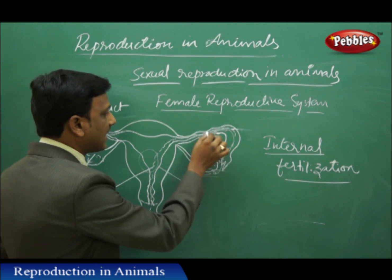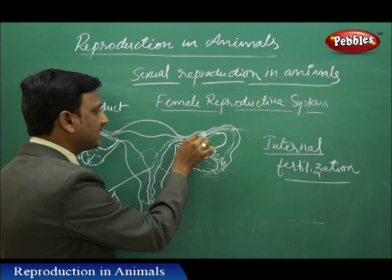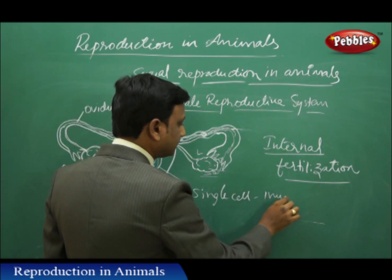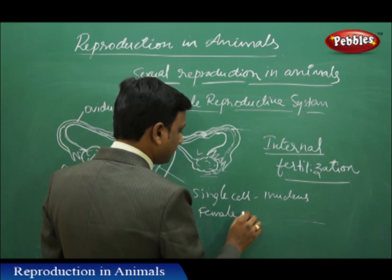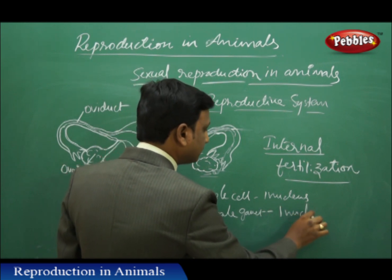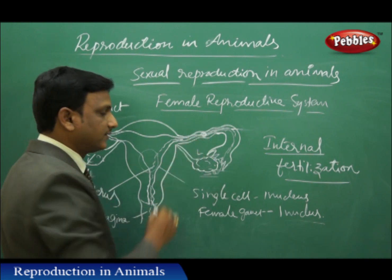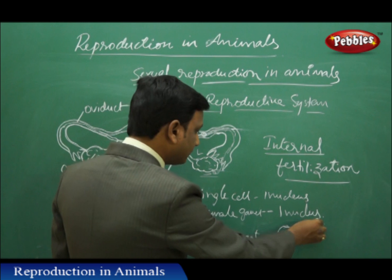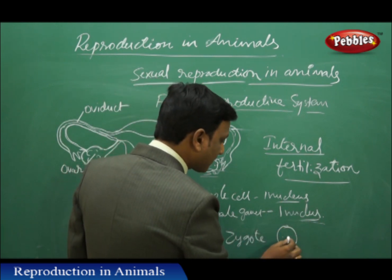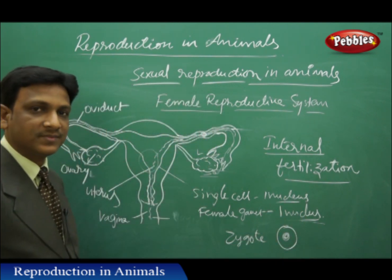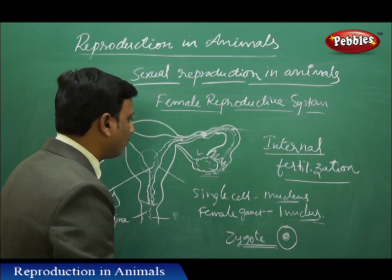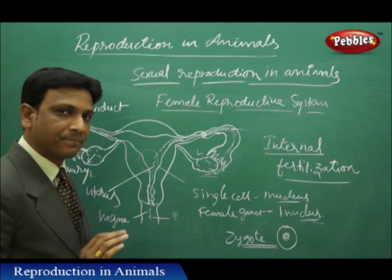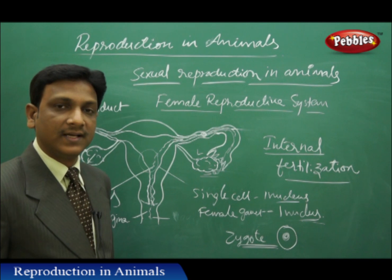If the fallopian tube already has an ovum released by the ovary, the male cell fuses with the female cell. The male cell is a single cell with one nucleus, and the female gamete is also a single cell with one nucleus. When fusion - fertilization - takes place, it forms a zygote. Both nuclei merge together to form a single nucleus; they do not remain as two separate nuclei. This zygote is formed in the fallopian tube. Fertilization taking place inside the female body is called internal fertilization.